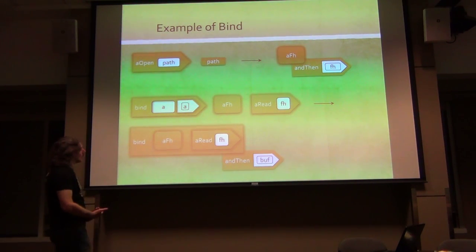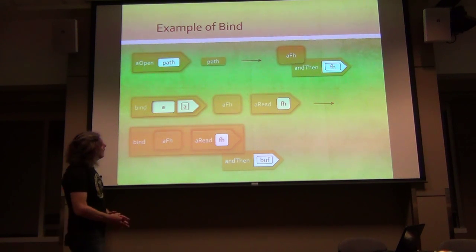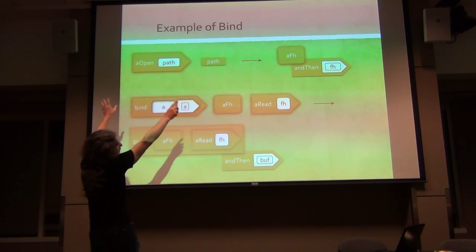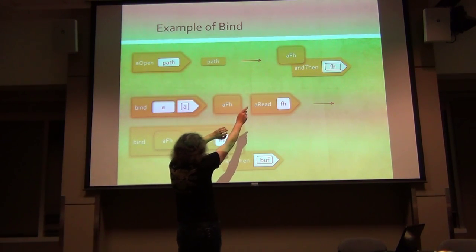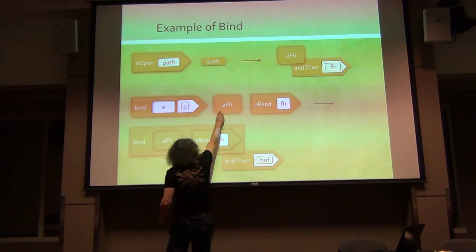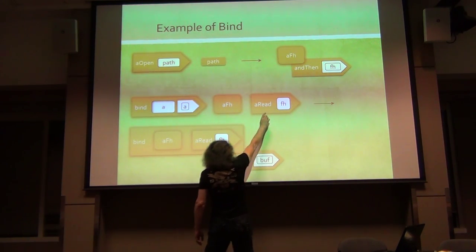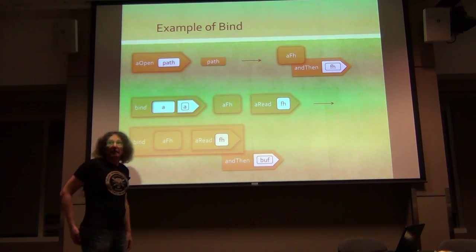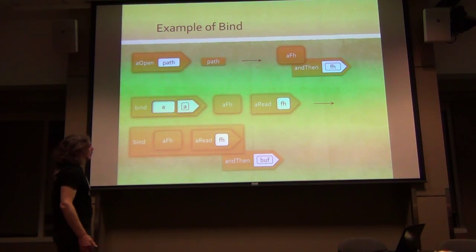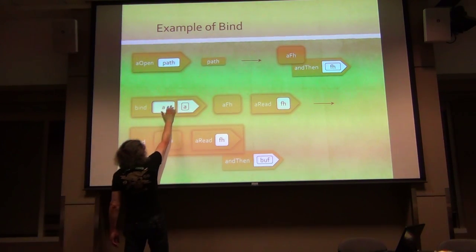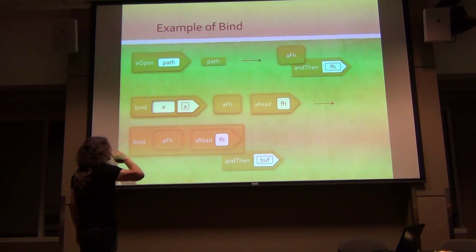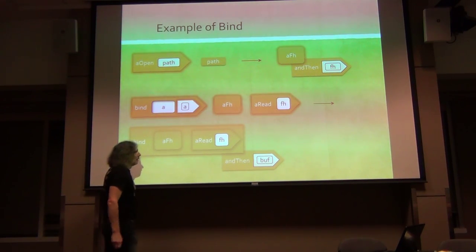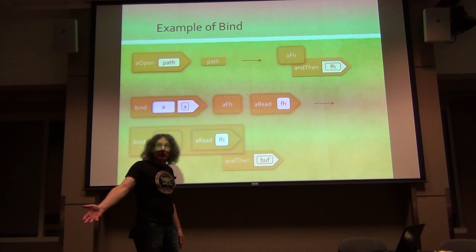Now we want to use bind. We plug this async file handle object as the first argument to bind, and we plug the read monadic function as the second argument to bind. And lo and behold, we get a plugged result which is an async object.